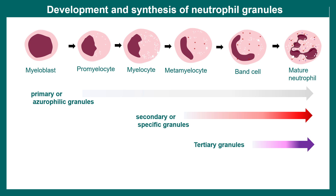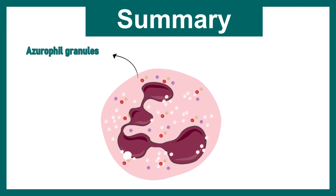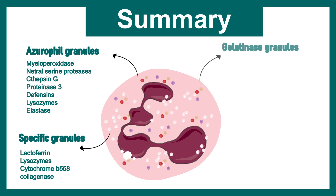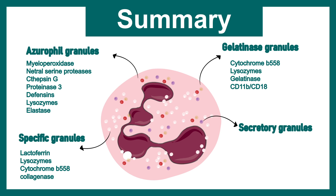To summarize, the two most important granule types in neutrophils are azurophilic or primary granules, whose contents include myeloperoxidase, cathepsin G, proteinase 3, and lysozymes; and specific or secondary granules. We also looked at gelatinase granules and secretory granules which contain alkaline phosphatase, chemokines, and more. It is important to note that many of the contents across these granules can overlap.